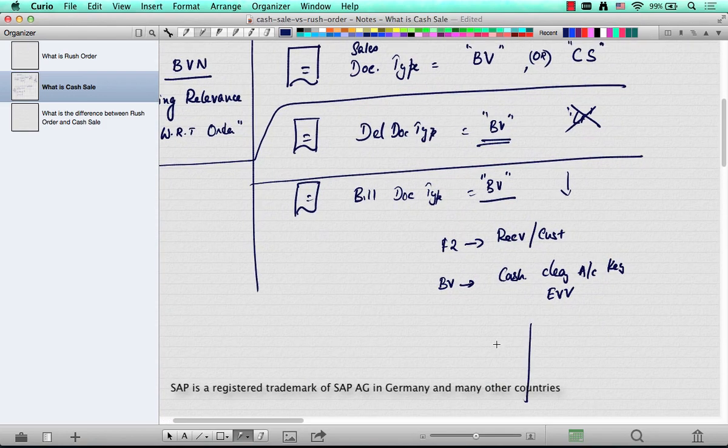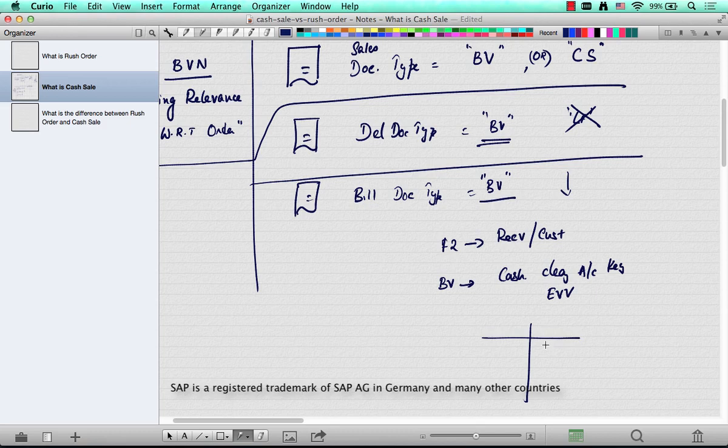And what it does is, instead of posting to the customer recon, it posts directly to the revenue as a credit and cash as a debit, so that the customer recon account or the receivable account is no longer in the picture. And that's achieved using the special cash clearing account key called EVV. And this is not available in a standard invoice or debit memo. This is how cash clearing is achieved using the special document type called BV.